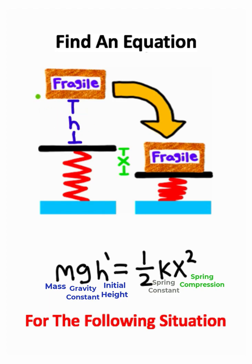The reason is because this H accounts for the height that the box is above the spring. But that's not how far the box is falling down. The box is going to fall down the height of the spring plus this little displacement, so H prime and H are not going to be the same thing.